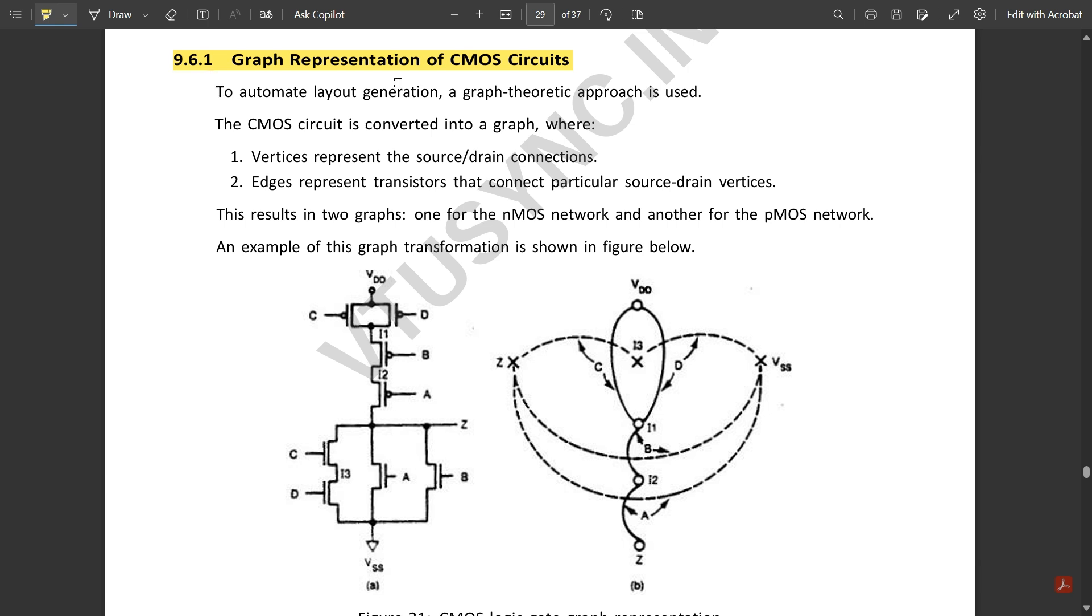To automate layout generation, a graph theoretic approach is used. The CMOS circuit is converted into a graph where vertices represent the source/drain connections, and edges represent the transistors that connect particular source drain vertices. This results in two graphs: one for the nMOS network and another for the pMOS network.